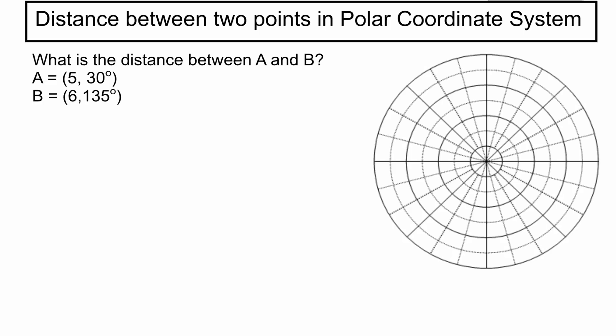So here's a problem that's been presented. It says, what's the distance between points A and B? And A is 5, 30 degrees and B is 6, 135. So the goal in this video is we want to figure out how can we find the distance between any two points in the polar coordinate system. And so we're going to start with an example and then we'll kind of generalize from there.